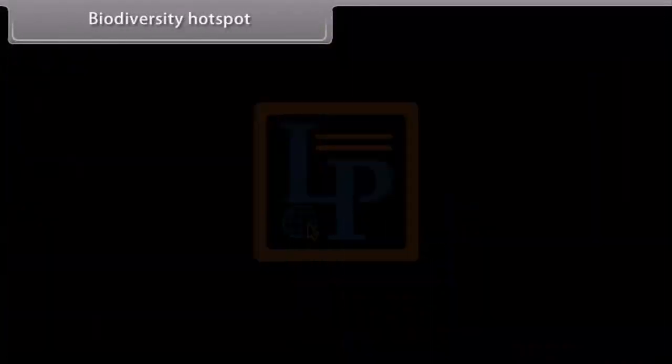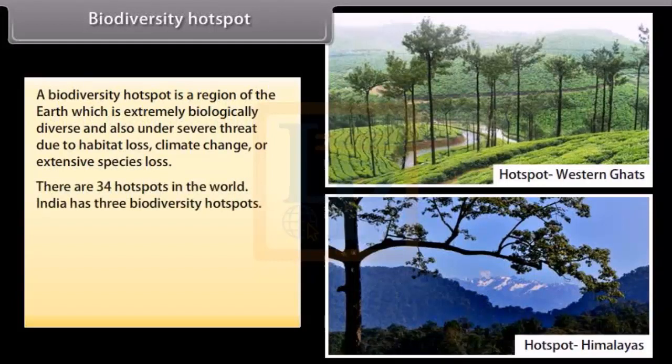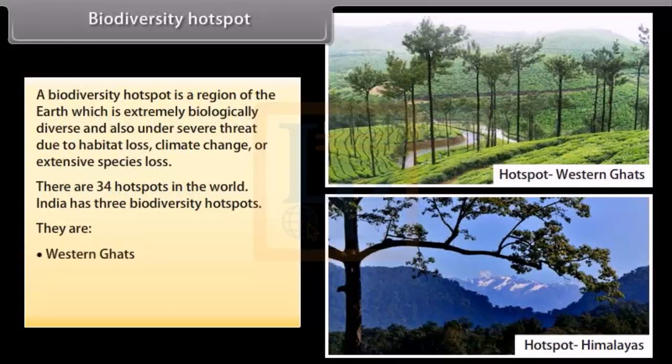Biodiversity Hotspot. A biodiversity hotspot is a region of the earth which is extremely biologically diverse and also under severe threat due to habitat loss, climate change or extensive species loss. There are 34 hotspots in the world. India has three biodiversity hotspots. They are Western Ghats, Himalayas and Indo-Burma region.